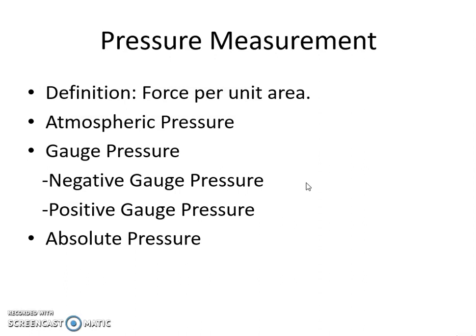The local atmospheric pressure may be either lower or greater than the standard atmospheric pressure at sea level. If the local place under consideration is higher than sea level, then the atmospheric pressure at that place is lower than the standard atmospheric pressure. If the place is lower than sea level, then the pressure at that point is higher than the standard atmospheric pressure at sea level.